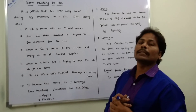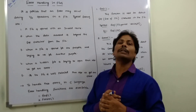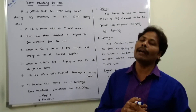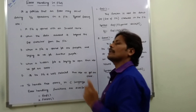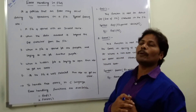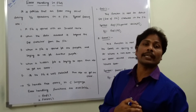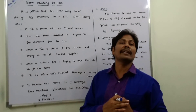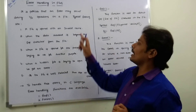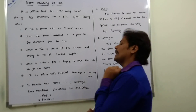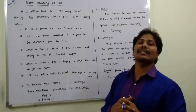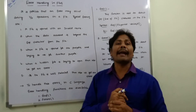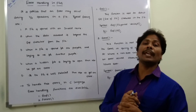Suppose a file is hidden and we try to access or open it — an error will occur. The fifth point is if the file is write-protected; we cannot perform any operation on it, and trying to write to it will result in an error. To handle these errors, C language provides some error handling functions.